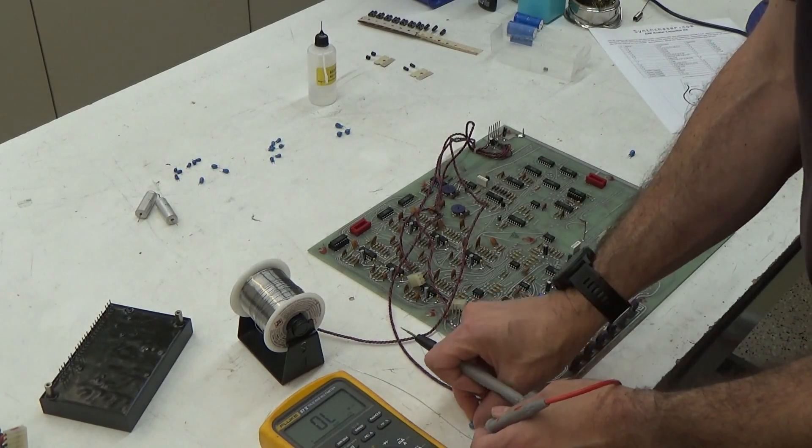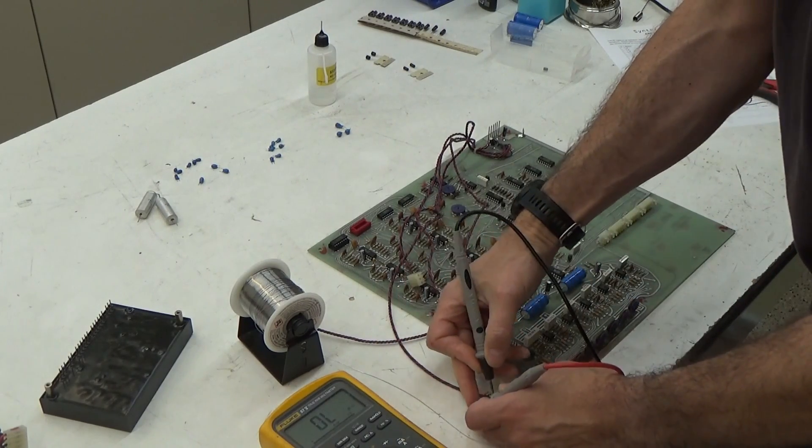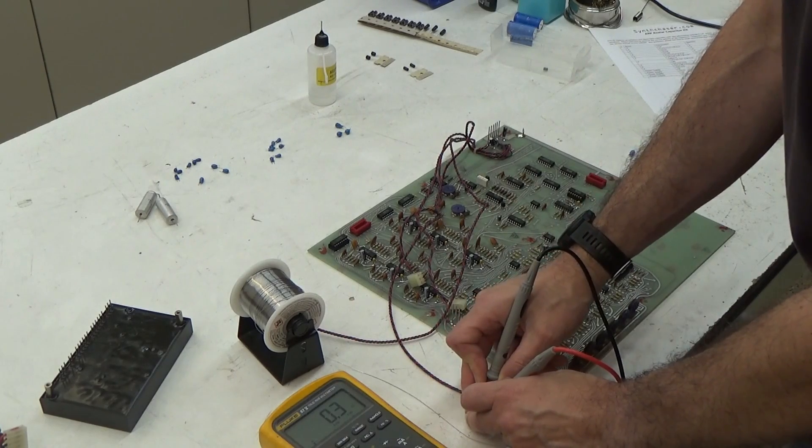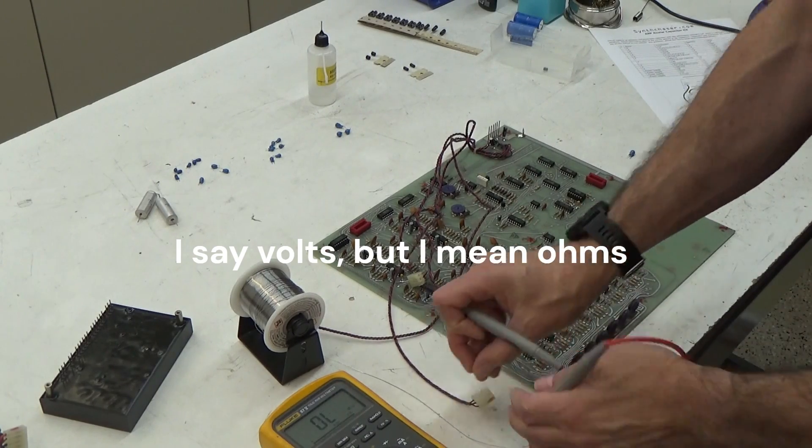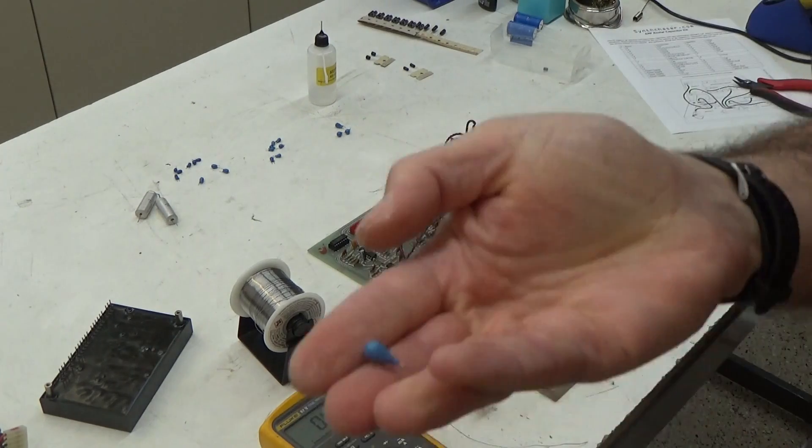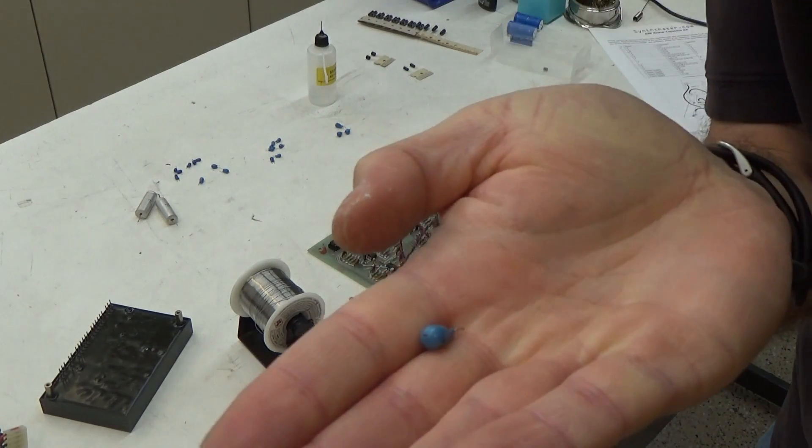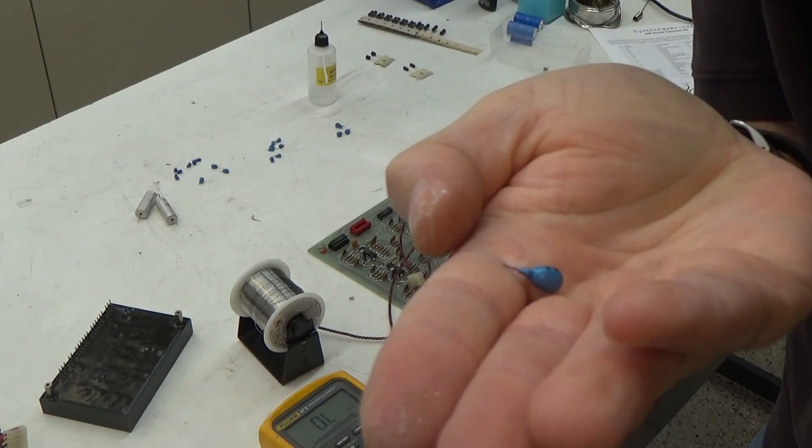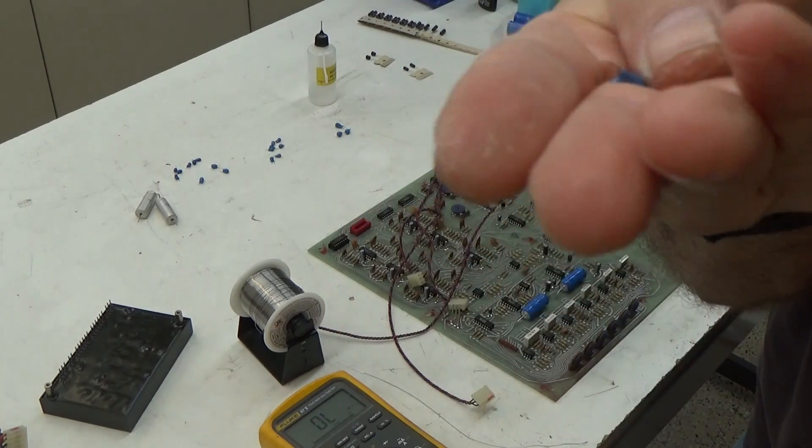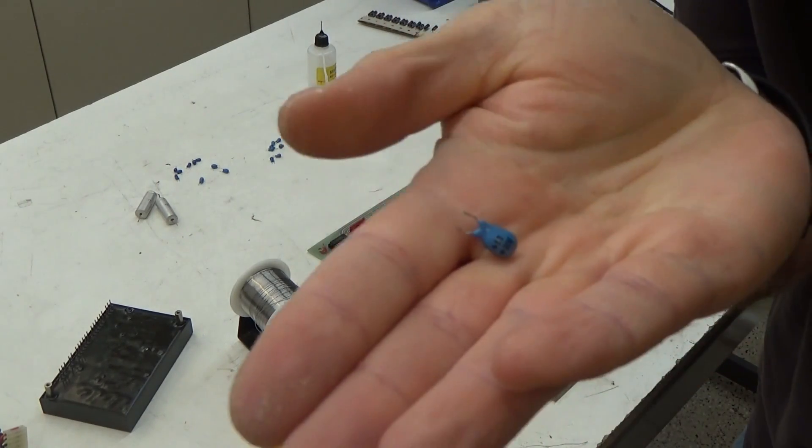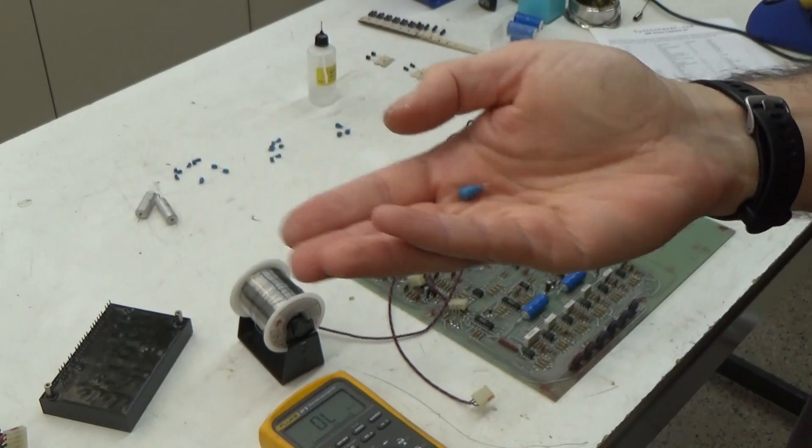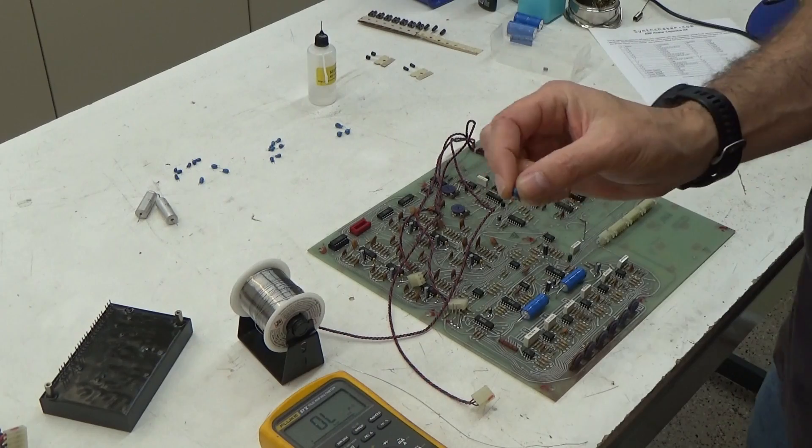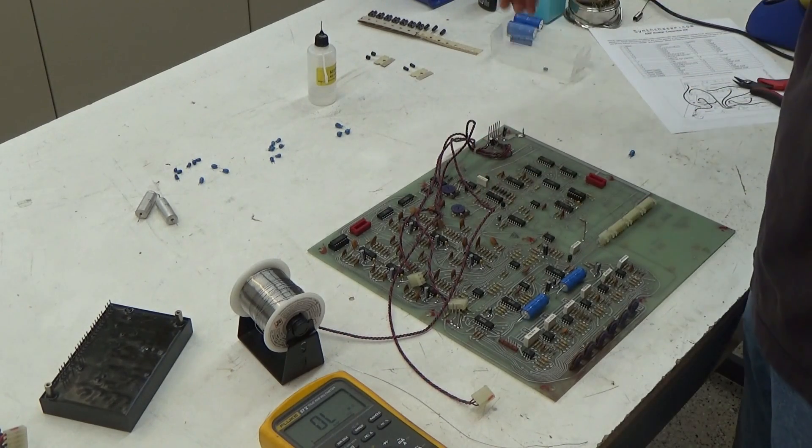And sure enough, there it is, 0.3 volts. So this capacitor, even though it doesn't look like there's anything wrong with it from the outside, the coating isn't cracked for moisture to get in, it's not burnt or anything like that, this component is shorted, and we've resolved that now.